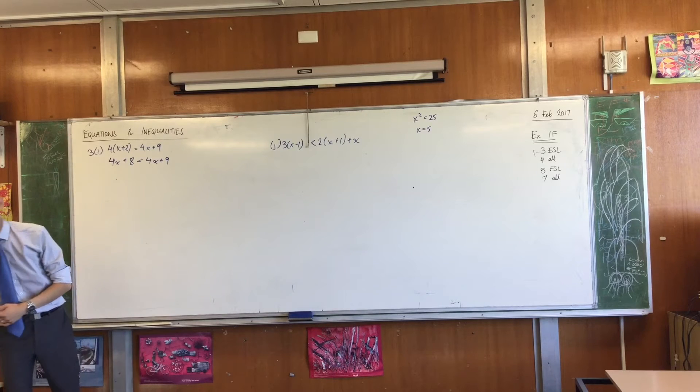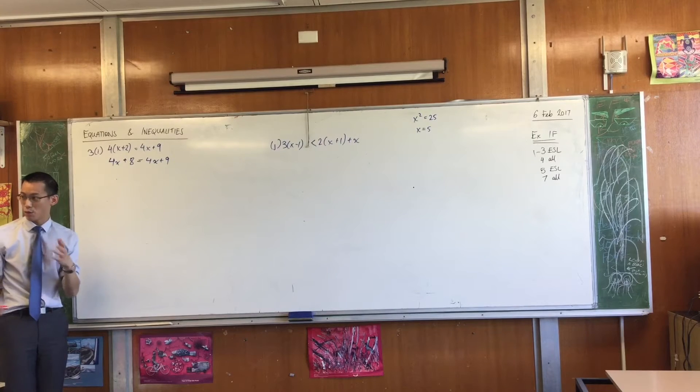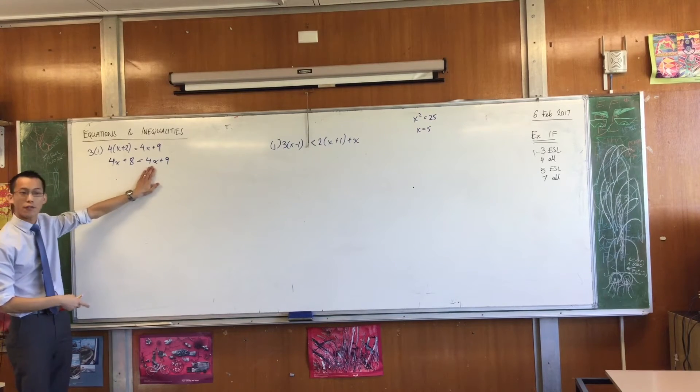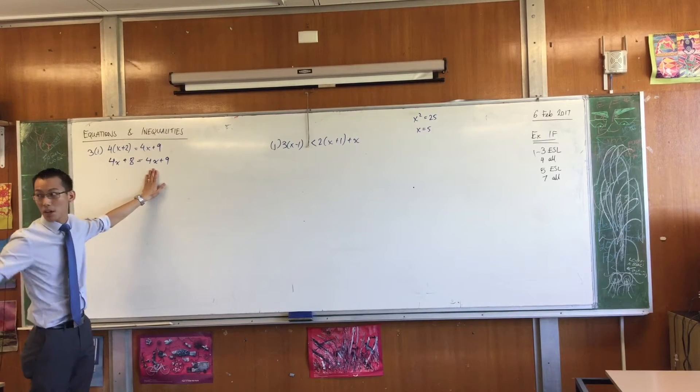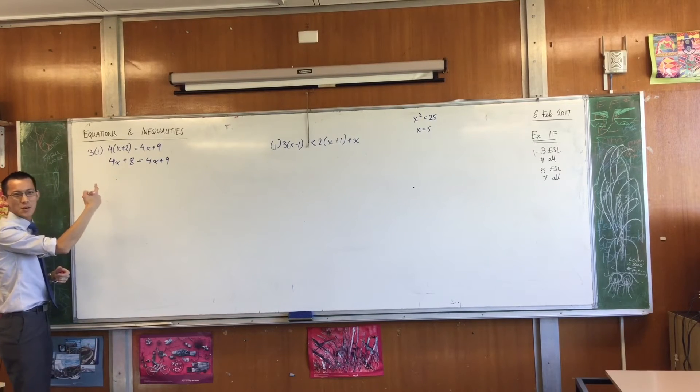I noticed that both sides have a 4x on them, right? So a normal thing to do would be to get all the x's on one side. So let's get all the x's off here. What am I going to have to do to get rid of all the x's over here? I'm going to have to subtract 4x on both sides.